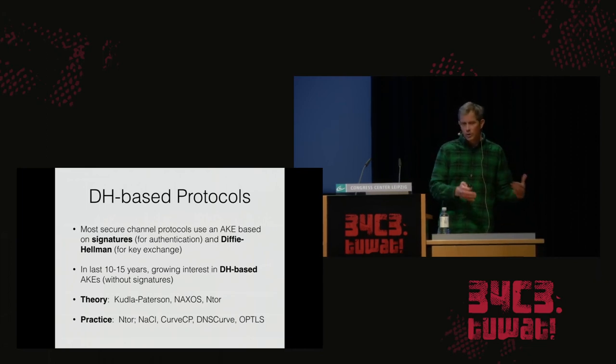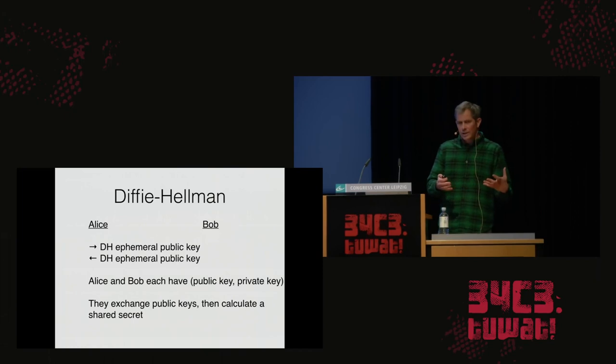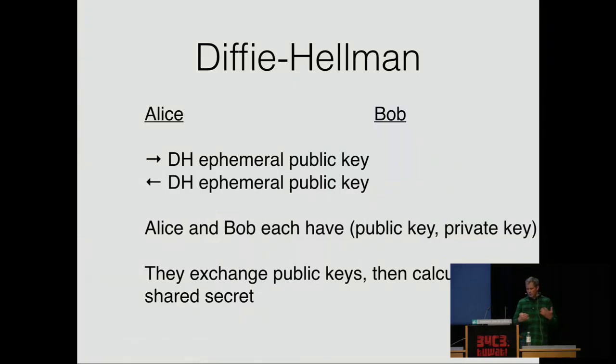I want to explain a little more about how Diffie-Hellman-centric AKEs work. We start with just the key exchange part — an unauthenticated Diffie-Hellman key exchange. Alice and Bob each have a key pair, a private key and a public key. They exchange their public keys, then each takes their private key, combines it with the other's public key, and gets a shared secret which is the same for both parties.